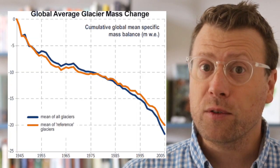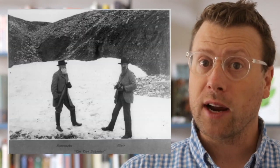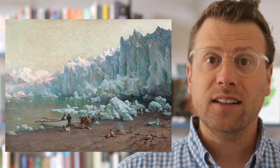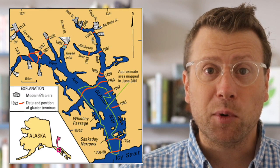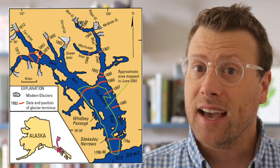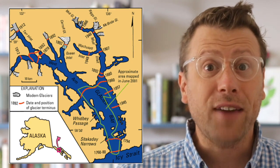Glacial retreat is happening all over Earth, but Glacier Bay National Park has long been a poster child for this phenomenon. This is in part due to the promotional writings of John Muir, who traveled to Glacier Bay in the late 1800s to test his theory that Yosemite Valley was carved by glaciers. He found that the ice had not only retreated many tens of miles, but that the landscape was completely transformed, with a giant marine bay left behind where the ice had carved out and deepened the valley. In the last 200 years, the glacial retreat rates in Glacier Bay National Park are the fastest on Earth.